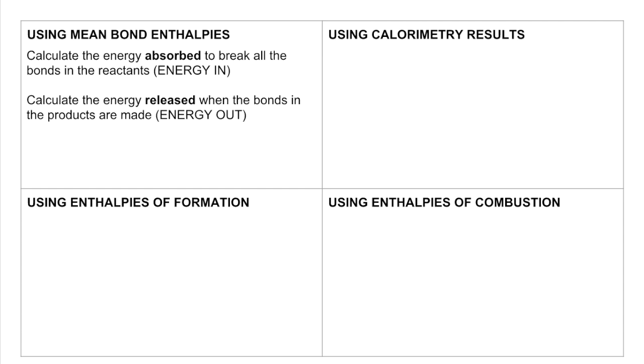Next thing we'll do is calculate the energy that's going to be released when the bonds in the products are made. Making bonds is an exothermic process, so I'm calling that energy out. And then the enthalpy change, the delta H for the process, is the energy in minus the energy out.